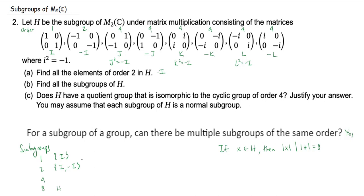What about subgroups of order 4? I'm going to need more elements. I know one of them has to be the identity, and I'm definitely going to need one of the J, K, or L's. So let me put J in. J has order 4, and that generates a subgroup of order 4: J, J squared which is negative I, and J cubed which is the same as negative J — so the subgroup generated by J is {I, J, -I, -J}.